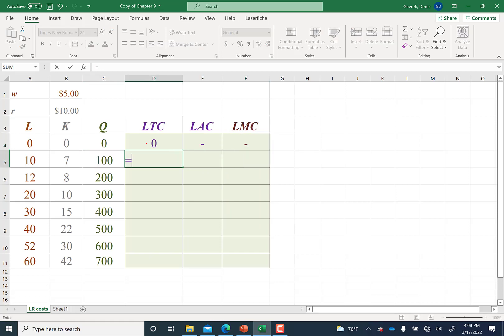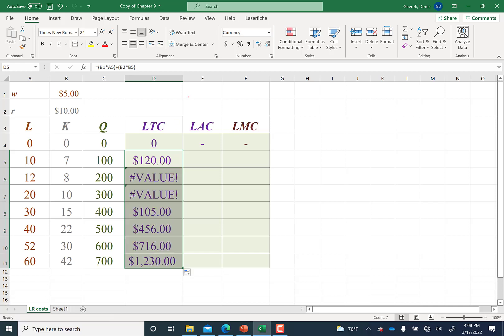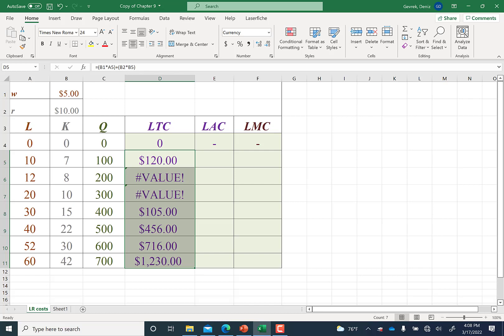So here's the table. Long-run total cost: you write down the formula. Grab the $5 times the number of labor employed. I highly recommend using parentheses. Let's see if it works. Grab this times boom, close the parentheses. Calculate. You're going to go to this right bottom corner and double-click.